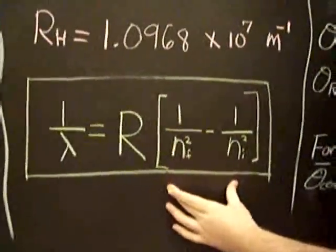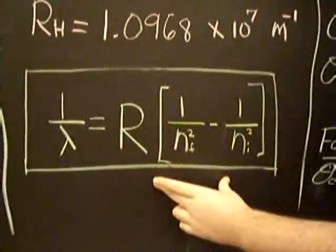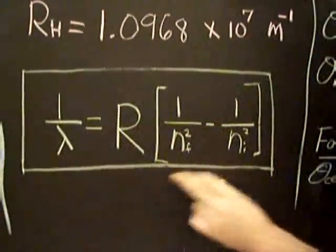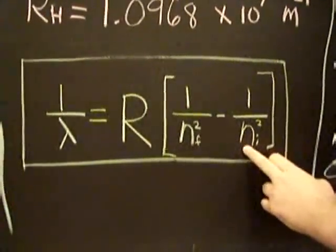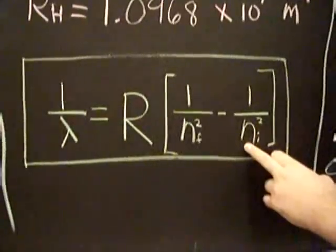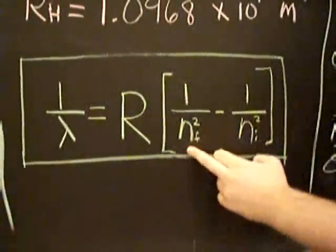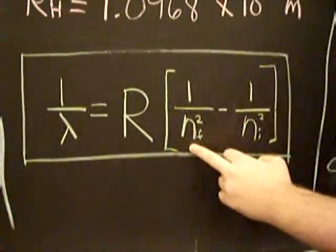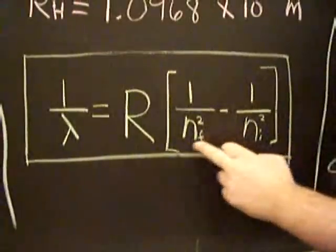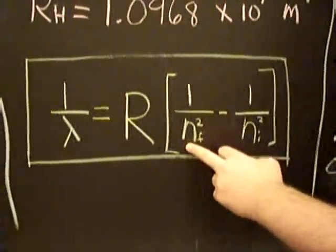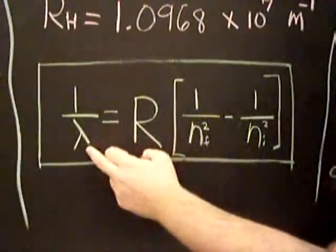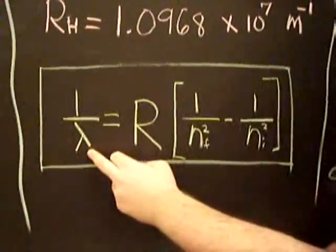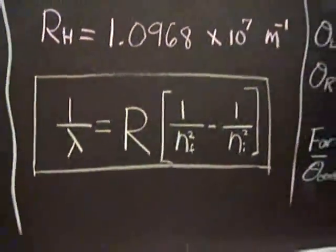What this equation is telling us is that if we have an electron in a certain state, an initial state nI, quantum number nI, and if it drops to a lower energy state, some final energy state with a different quantum number, it will release a photon of light with wavelength lambda.